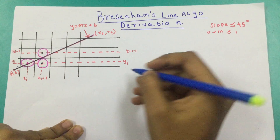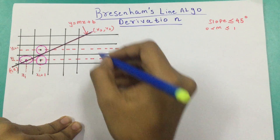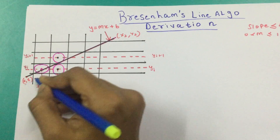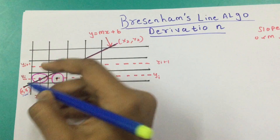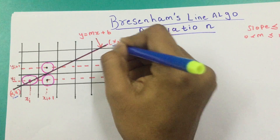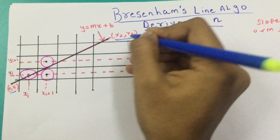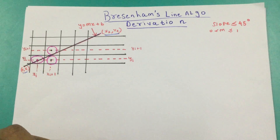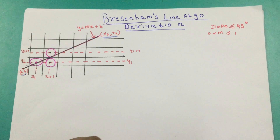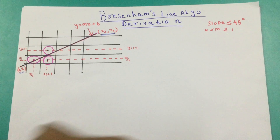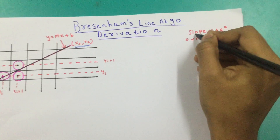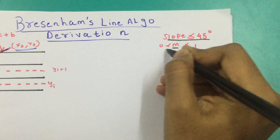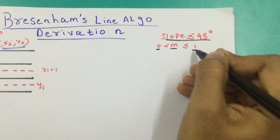Assumption number one is that the endpoints are x1, y1 and x2, y2. Assumption number two, the slope is less than 45 degrees, that is m is always between 0 and 1.